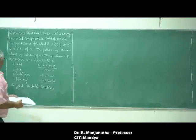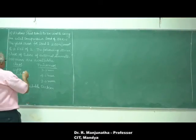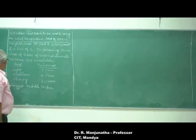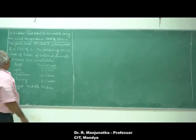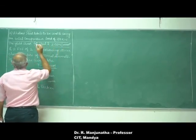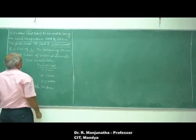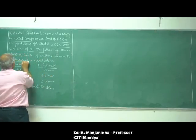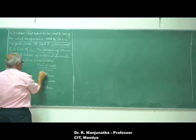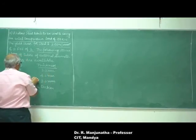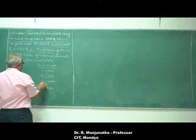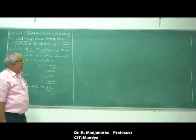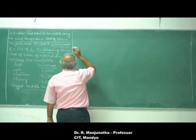We will take up one more example. A hollow steel tube is to be used to carry an axial compressive load of 150 kilonewtons. The yield stress for steel is 250 newton per mm square, and the factor of safety is 2. Three classes of tubes with external diameter 100 mm are available: light (3.5 mm thickness), medium (4.0 mm), and heavy (5 mm). Suggest a suitable section.